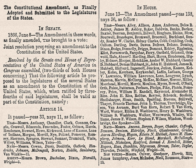Section 3 prohibits the election or appointment to any federal or state office of any person who had held any of certain offices and then engaged in insurrection, rebellion, or treason. However, a two-thirds vote by each House of Congress can override this limitation. In 1898, Congress enacted a general removal of Section 3's limitation. In 1975, the citizenship of Confederate General Robert E. Lee was restored by a joint congressional resolution, retroactive to June 13, 1865. In 1978, Congress posthumously removed the service ban from Confederate President Jefferson Davis. Section 3 was also used to prevent Socialist Party of America member Victor L. Berger, convicted of violating the Espionage Act, from taking his seat in the House of Representatives in 1919 and 1920.